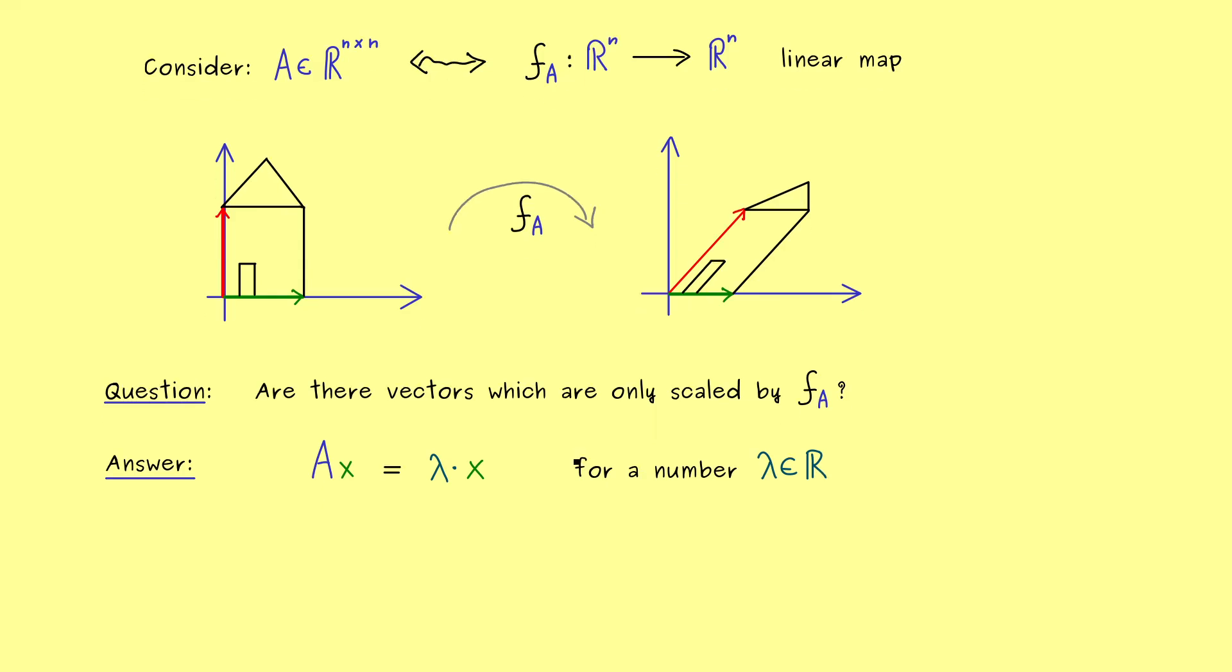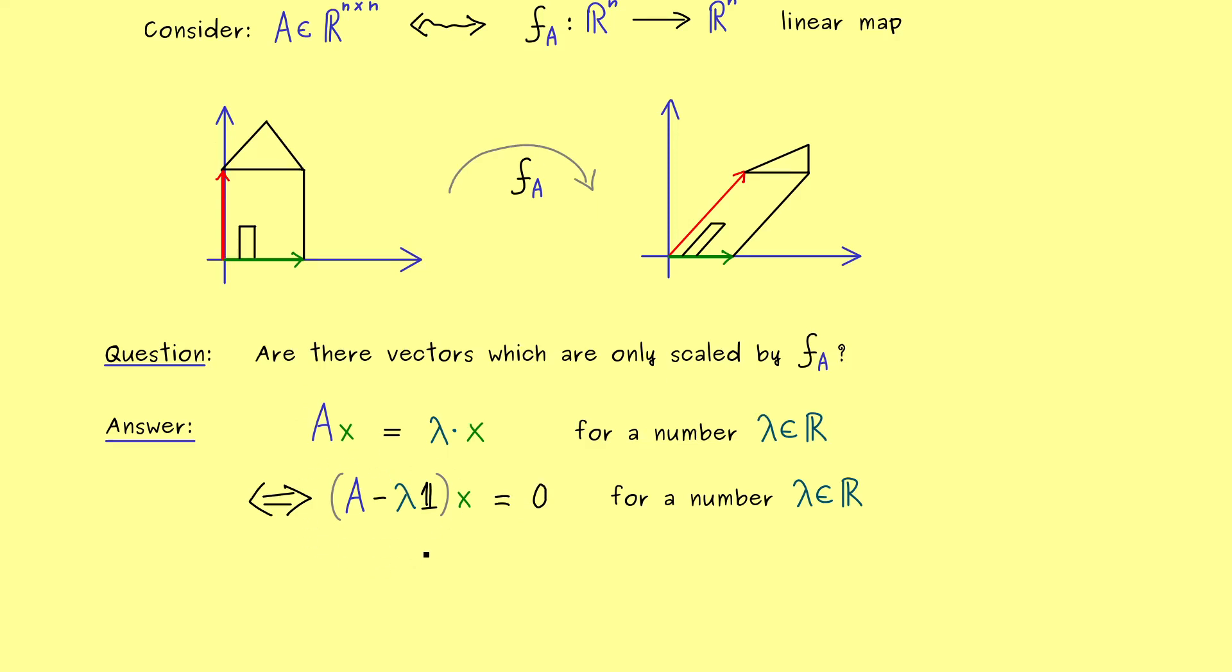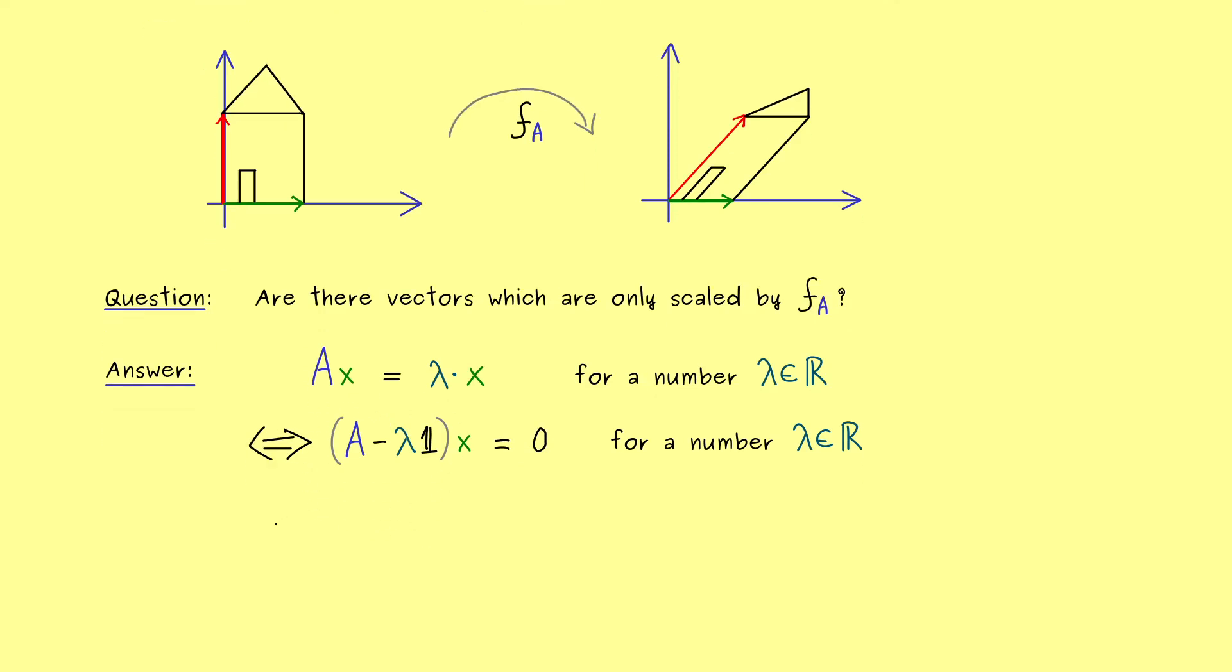And then we can write A minus lambda times the identity matrix, which you know we just denote by a bold 1. So there we have a new matrix, and we apply the vector x from the right hand side. And now this should be equal to the zero vector. So there you see, this is just rewriting this equation, and introducing a new matrix to make it simpler. And in fact, I would say it's simpler, because now we can say that the equation is just represented by the kernel of this matrix.